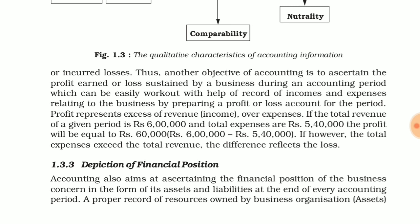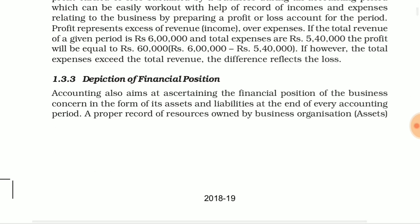If the total revenue of a given period is 6 lakhs and total expenses are 5 lakhs 40 thousand, the profit will be equal to 60 thousand. If the total expenses exceed the total revenue, the difference will reflect as losses. If your revenue is 5,40,000 and your expense is 6,00,000, it is possible to keep the balance negative. So when expenses exceed revenue, you will incur a loss. That covers the calculation of profit and loss. The third point is depiction of financial position.